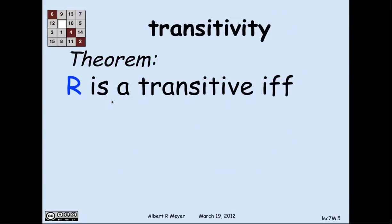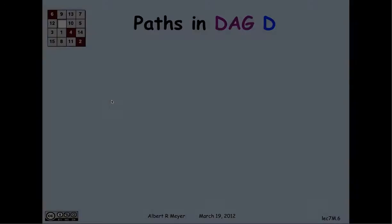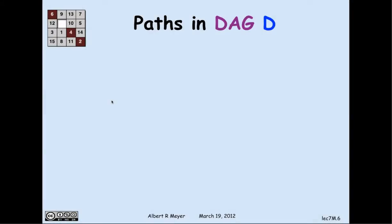The basic theorem is: what is transitivity capturing as a property of a relation? A relation R is transitive if and only if R is equal to the positive walk relation for some digraph G. The proof is basically trivial, because you can let the relation R be the digraph that it's the positive path relation of.